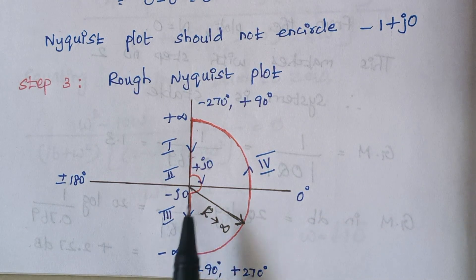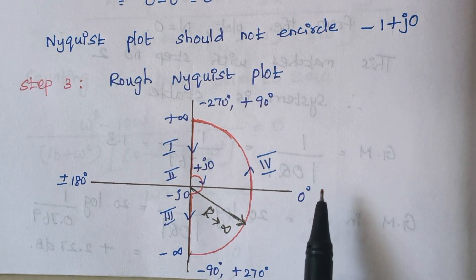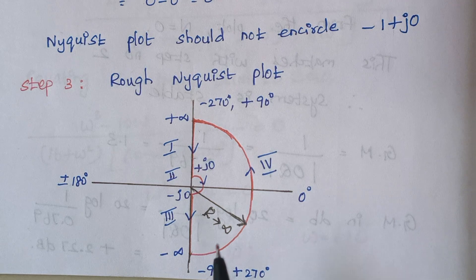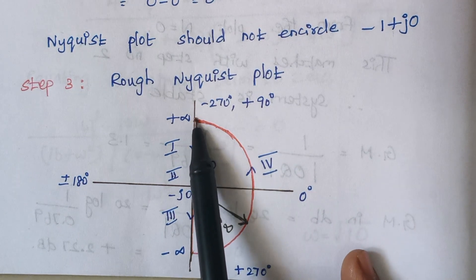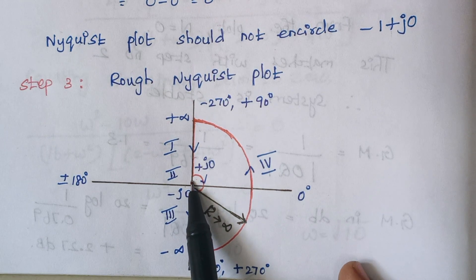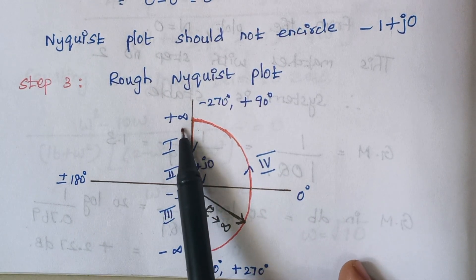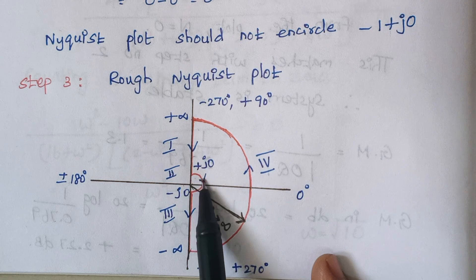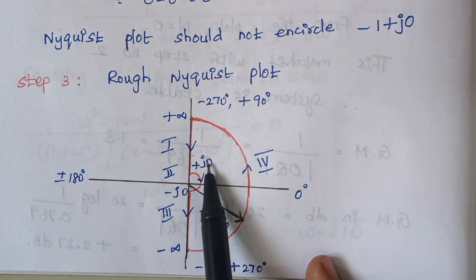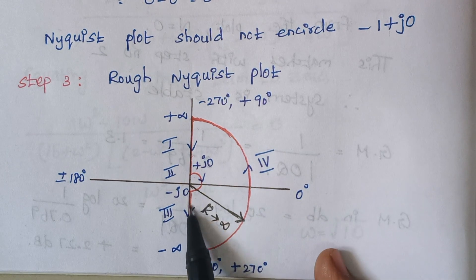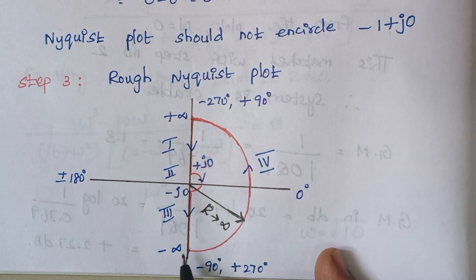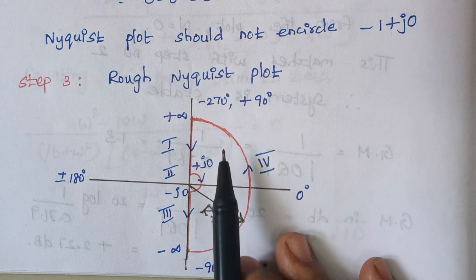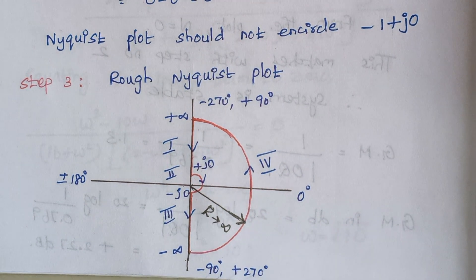On the general graph, clockwise movement gives negative angles and anticlockwise gives positive angles. Section 1 starts at ω = +∞ and ends at ω = +0. The small semicircle is Section 2, starting at +0 and ending at −0. Section 3 starts at −0 and ends at −∞. Section 4 starts at −∞ and ends at +∞. This is the rough Nyquist plot.